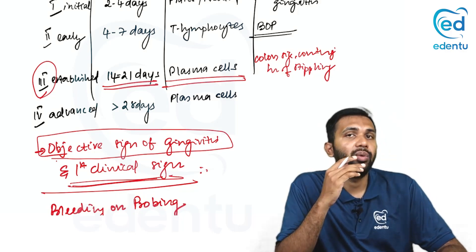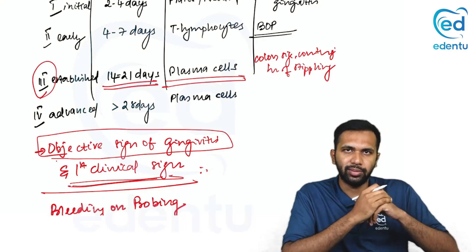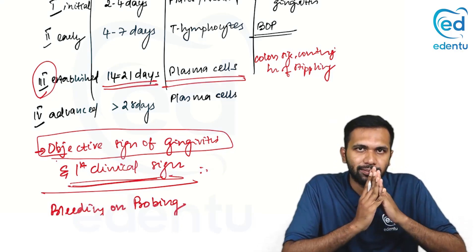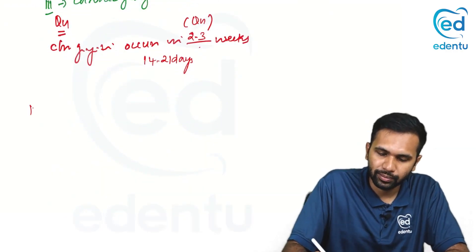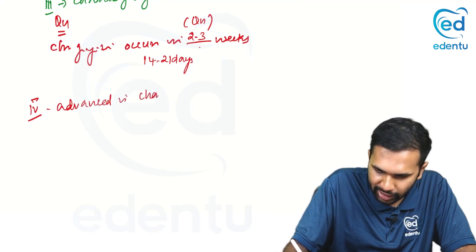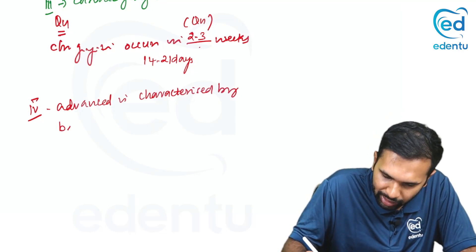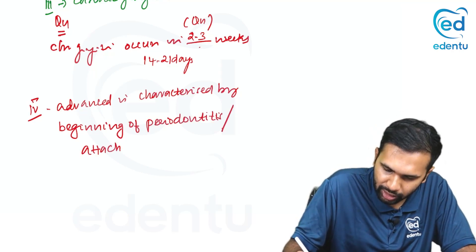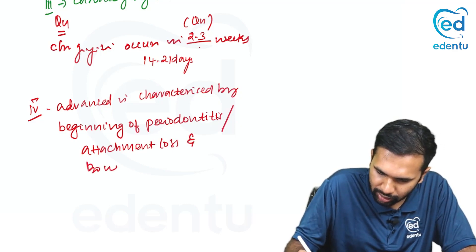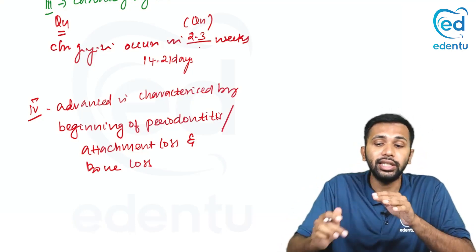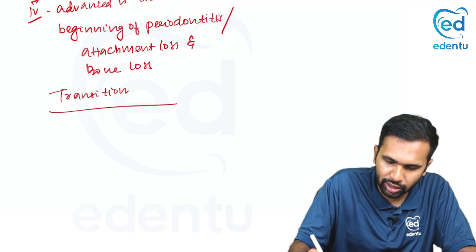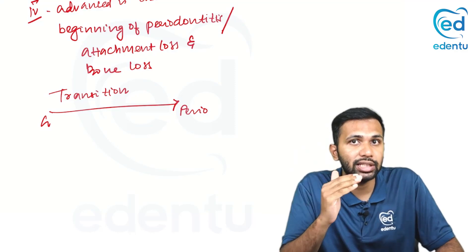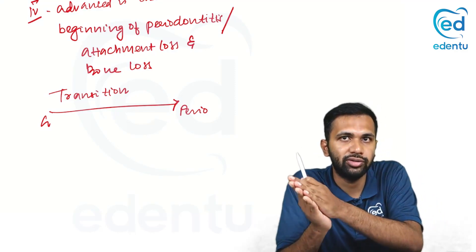Coming to stage 4, the advanced lesion — the predominant cells are also plasma cells. So what is the difference between stage 3 and stage 4? The difference is that stage 4 or the advanced stage is characterized by the beginning of periodontitis. You get attachment loss and bone loss beginning. This stage marks the transition from gingivitis to periodontitis.